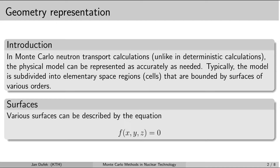From this point of view Monte Carlo codes have a big advantage as compared to deterministic solvers. In case of deterministic solvers the geometry of the system has to be homogenized over a number of nodes, and this homogenization introduces some bias into the results.